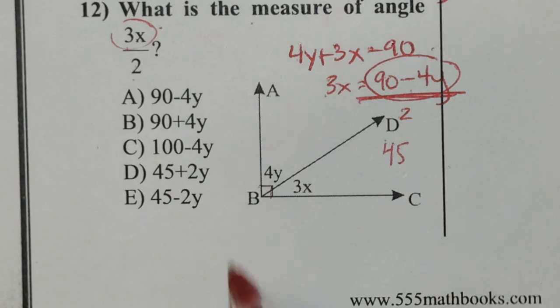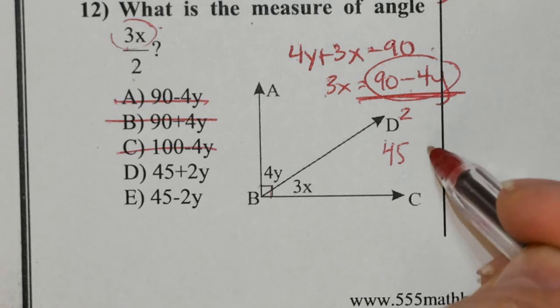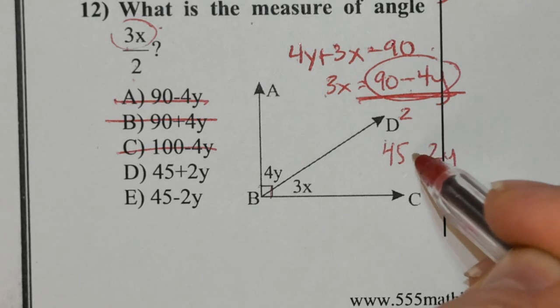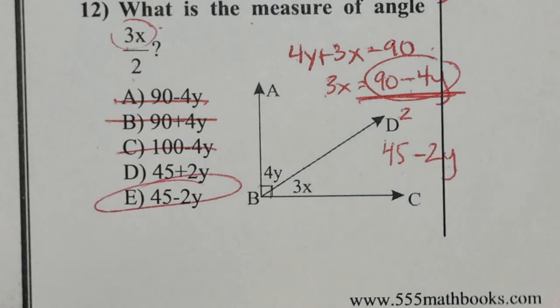Anything without a 45 in front is going to be eliminated. 4 divided by 2 is 2. Attach the y and remember to bring down the negative sign. The correct answer is E.